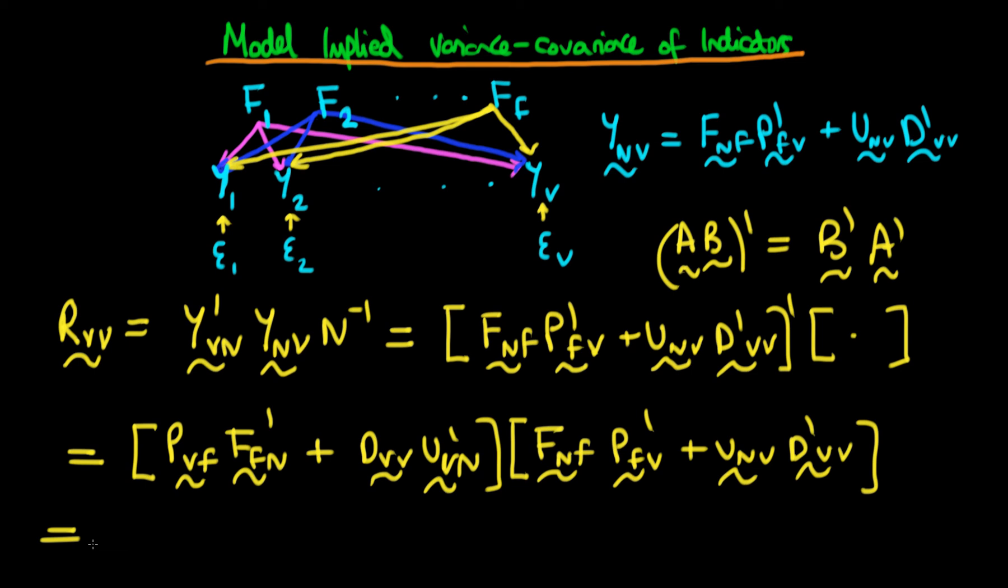So if we actually expand this, then the first term we're going to get is just when I take this first expression here and multiply it by the first expression in the second parenthesis. So if we do that, what we get is we get p_vf times f_fn all transposed times f_nf times p primed fv. So that's the first expression.